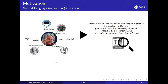In our case, from knowledge graphs — because natural language generation also includes inputs like images, videos, and other types. But here, we have a resource: Albert Einstein's resource from DBpedia. We can see that it has a birthplace, a death place, and an RDF type. On the right side, you have an automatically generated text: Albert Einstein was a scientist who worked in physics. He was born in Ulm and graduated from the University of Zurich. Also, he died in Princeton and had under his guidance Ernst Gabusthus.